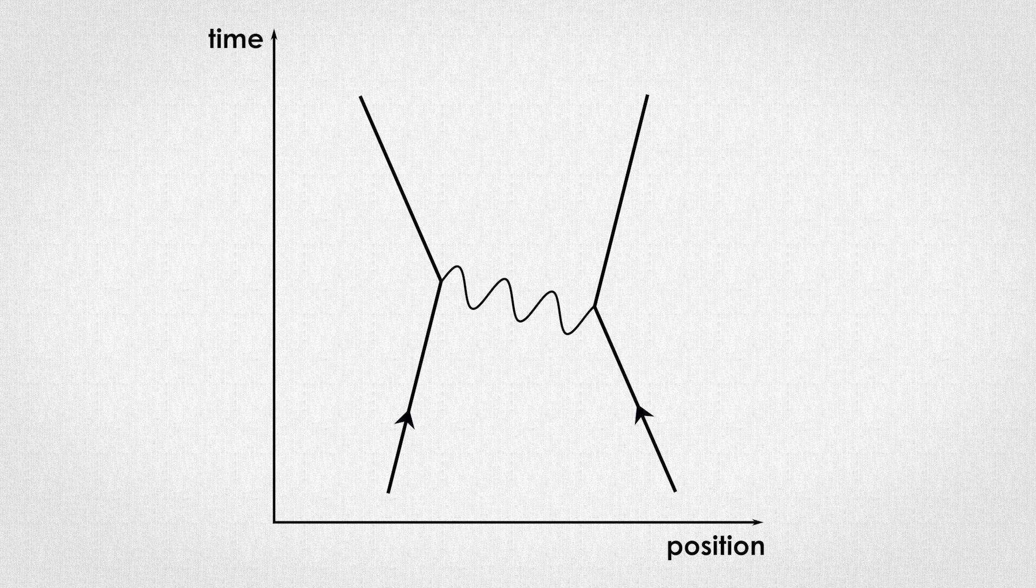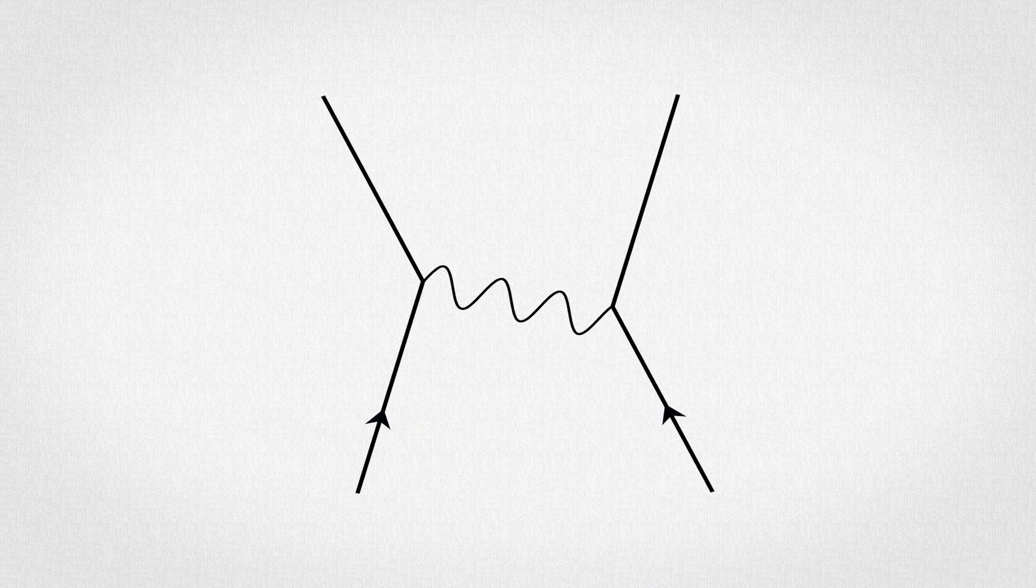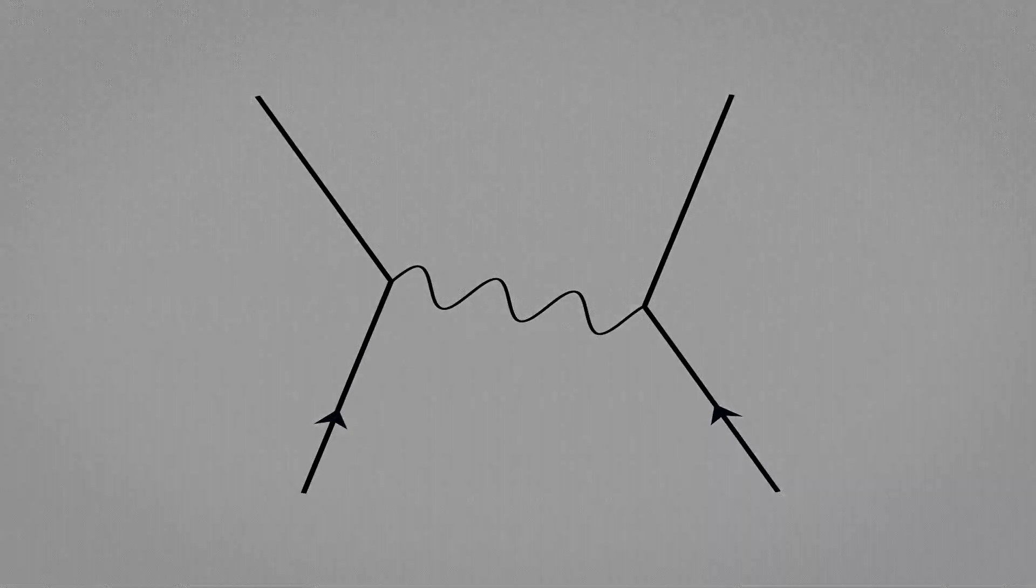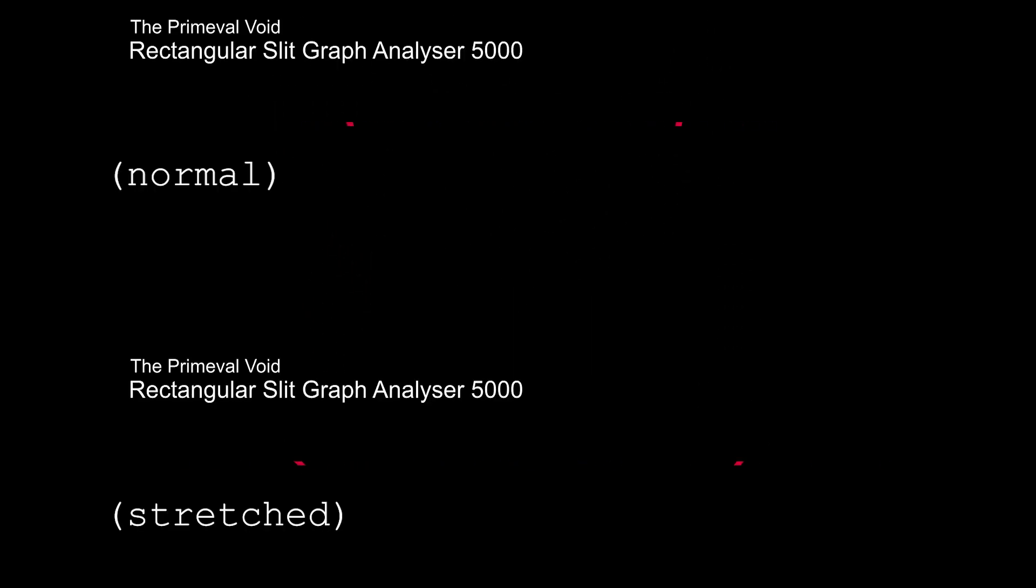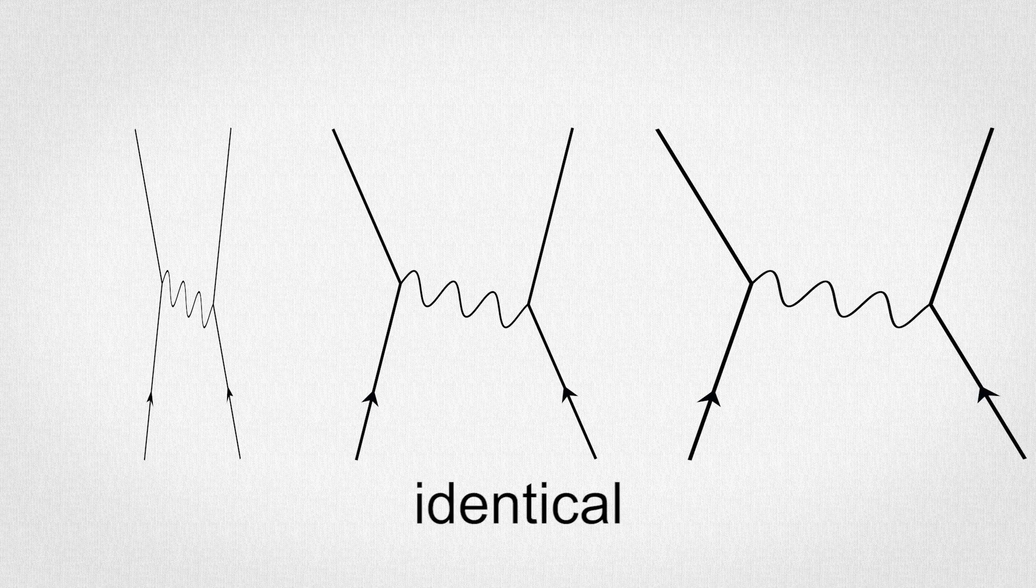For starters, while it looks like one, a Feynman diagram is not a graph. Because you could take this diagram, stretch these lines and none of the underlying math would change. But the animation is completely different. The truth is, even if your quick and dirty animation does not agree, all of these diagrams are identical.